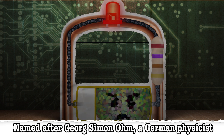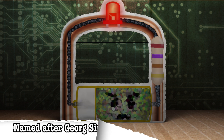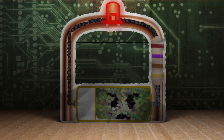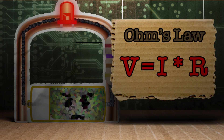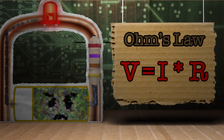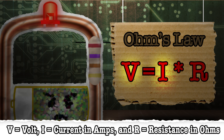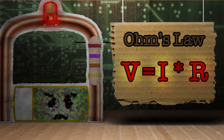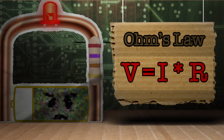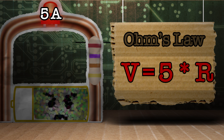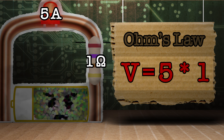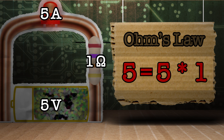So at this point we have the three essential components of a circuit. But how do they all relate? This is where Ohm's law comes in. Ohm found that the amount of voltage needed to power this circuit was equal to the current in amps times the resistance in ohms. Knowing two of these values, using this equation we can find out the value of the third. For example, if our LED was rated for five amps and we had a one ohm resistor, it would require five volts to light the LED.